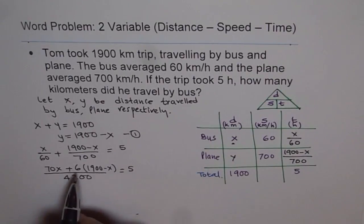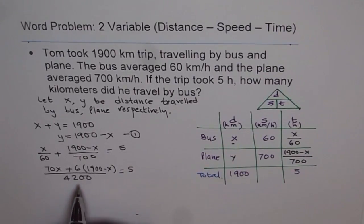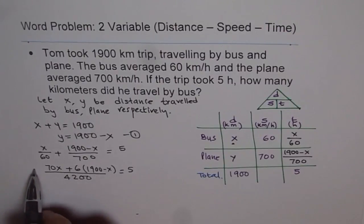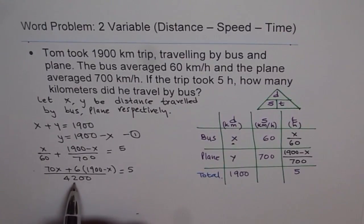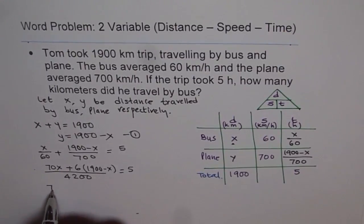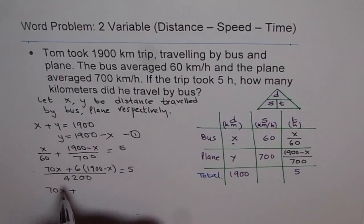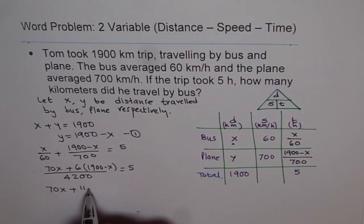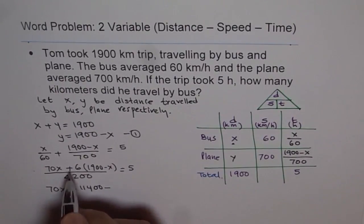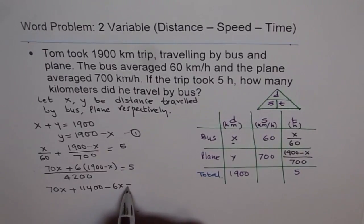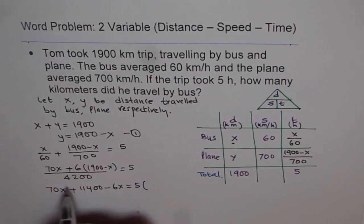6 times 1900 minus X equals 5. So we can use calculator, multiply all this and then we'll multiply both sides by 4200 to get rid of fractions. So we get 70X plus 6 times 1900. Let me use the calculator now. 6 times 1900 equals 11,400. So we get 11,400 minus 6X equals 5 times 4200.